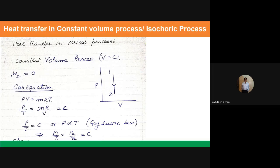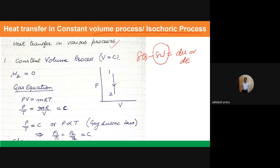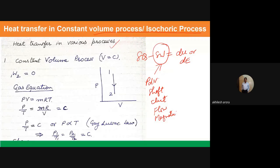The first process I am considering is a constant volume process, or isochoric process. For an isochoric process, let me remind you — I am talking about PDV work. In the equation ΔQ − ΔW = dU, this W could be PDV work, shaft work, electrical work, flow work, or magnetic work. Here we are talking about PDV work only for a simple compressible system. Whenever I am calculating heat transfer here, ΔW refers only to PDV work in a simple compressible system.